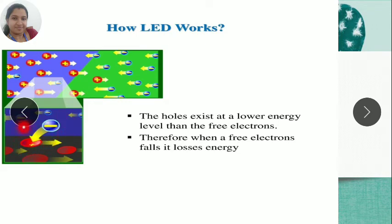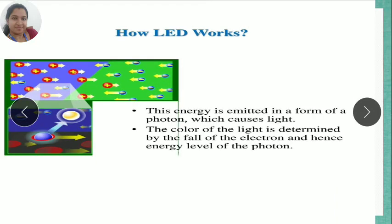This is an electron-hole recombination. When an electron falls into a hole, energy is released. This energy is emitted in the form of a photon. The photon is emitted in the form of light radiation, which is how the LED emits light.